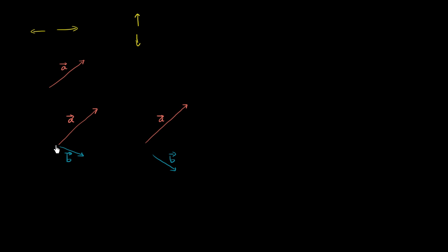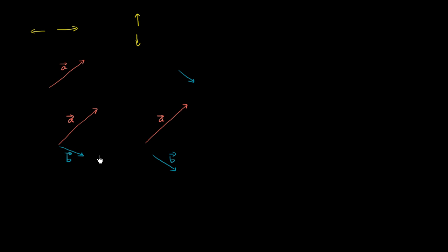We're not saying that its tail has to start at the same place that vector a's tail starts at. I could draw vector b over here — it's still vector b with the same magnitude and direction. So I can always have the same vector but shift it around, as long as it has the same magnitude, the same length, and the same direction. And the whole reason I'm doing that is because of the way to visually add vectors.